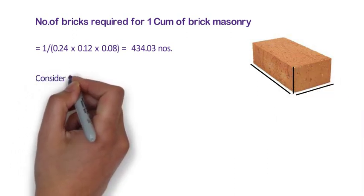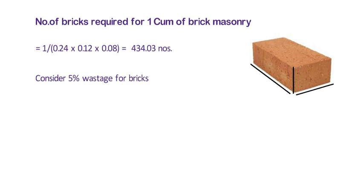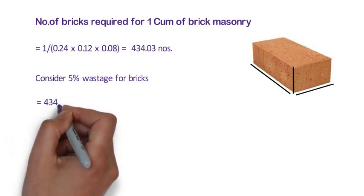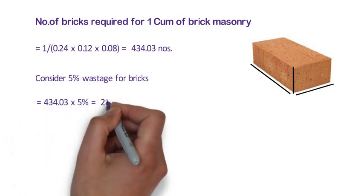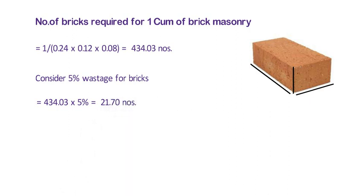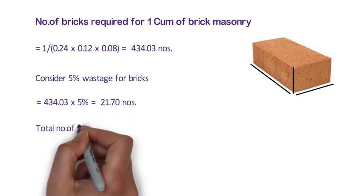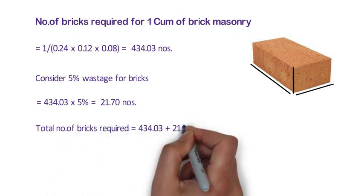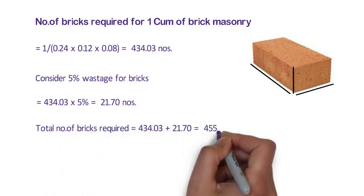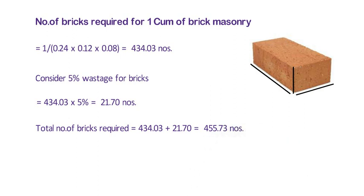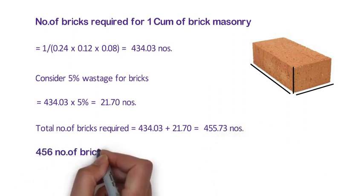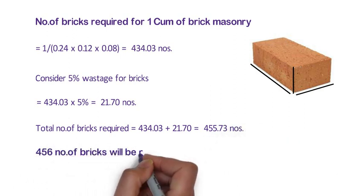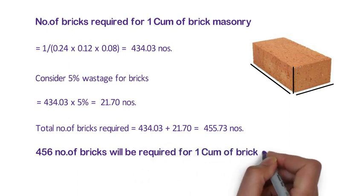Now we will consider 5% wastage in the bricks. So the wastage in bricks will be 434.03 x 5% is equal to 21.7 numbers. So the total number of bricks required shall be 434.03 plus 21.7 is equal to 455.73 numbers, approximately 456 numbers of bricks required for 1 cubic meter of brick masonry.